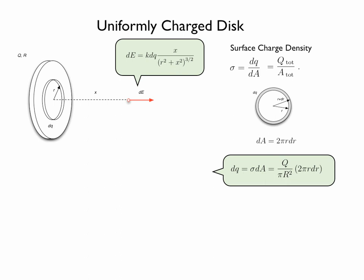dq equals the total charge of the disk Q over π big R squared, times 2π little r dr. Here big R is the radius of the disk and little r is the radius of the ring.